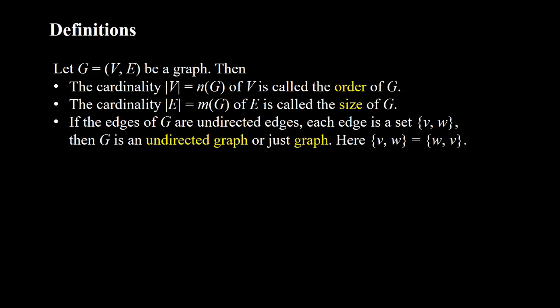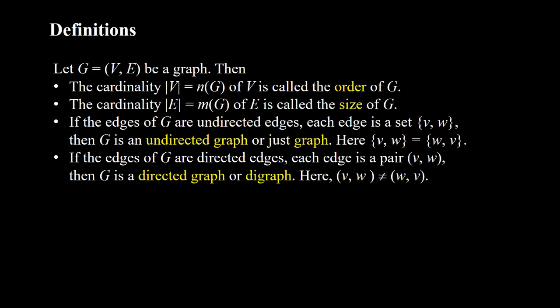If the edges of G are undirected edges, where each edge is represented by a set of two vertices {V, W}, then G is an undirected graph, or just graph. Because it is a set, the order is not important, so the set {V, W} is the same as the set {W, V}. If the edges of G are directed edges, where each edge is represented by an ordered pair (V, W), then G is a directed graph or digraph. Here the order is important, so the pair (V, W) is not the same as the pair (W, V).